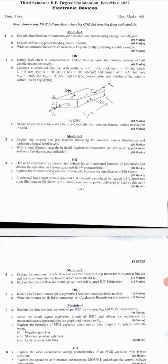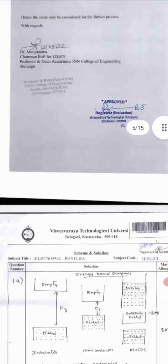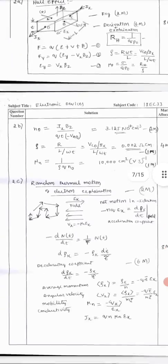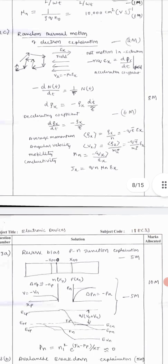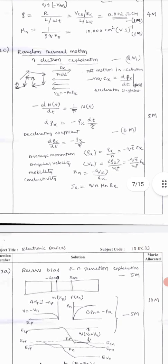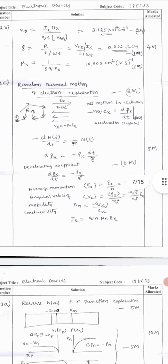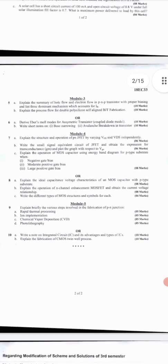Derive an expression for conductivity and mobility from the random thermal motion. For 2C, look at the answer. Random thermal motion, you should derive it. It is J_X equal to Q n mu_n X. Look at how the marks are divided. First, you should write the electron explanation, two marks. Then after that, it is going to be six marks till the decelerating coefficient, so totally it is eight marks. You can go for third A question.